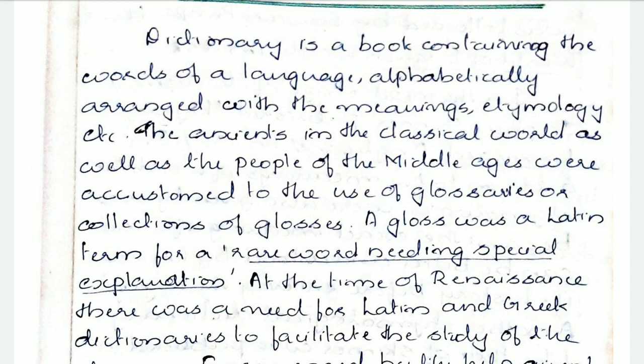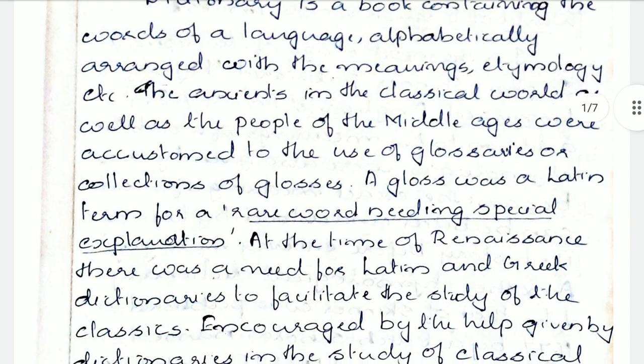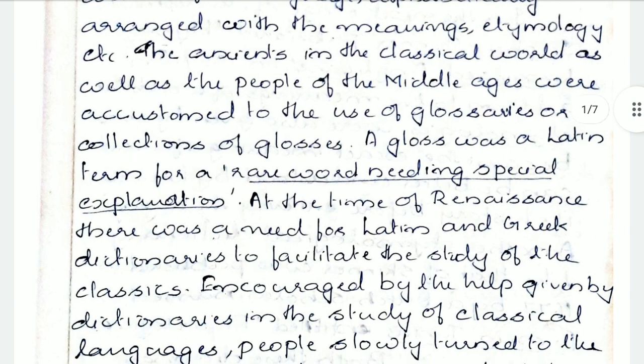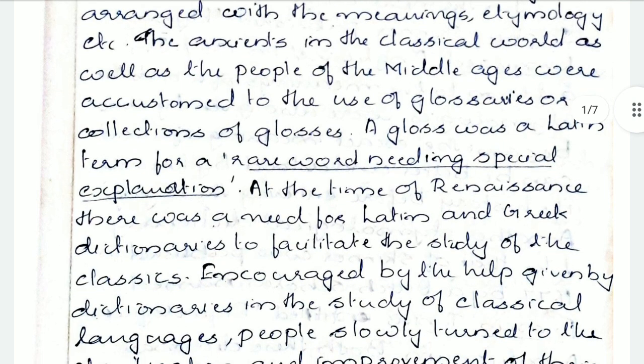The ancients in the classical world as well as the people of the middle ages were accustomed to the use of glossaries or collection of glosses. Gloss is a Latin term for a rare word needing special explanation — that is what actually served the purpose of a dictionary: a rare word needing special explanation.